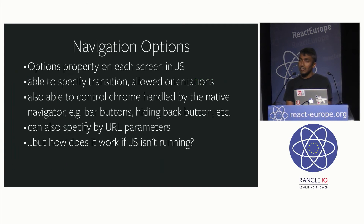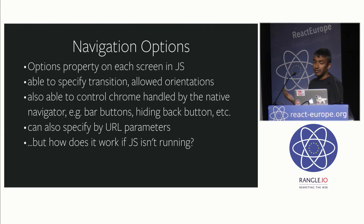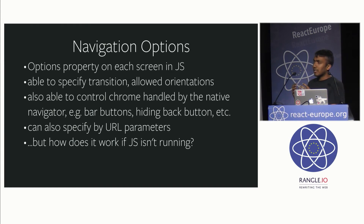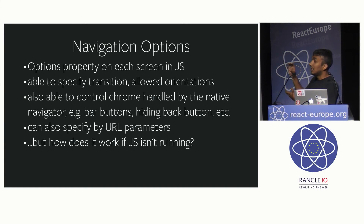The way we handled this is with something simply called navigation options — it's really just a big hash, or object property, on all of our screens. In this hash you can specify things like transition, allowed orientations, and the chrome you see — for example, whether the bar button should be a back button, how the top-right button should be handled, and the title. Interestingly, all of these can be specified by URL parameters. If you're opening a product page and want the title to be the actual product title, you can put that into your URL and have it show up on the screen properly.